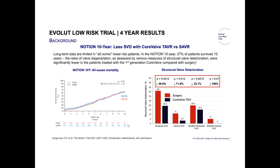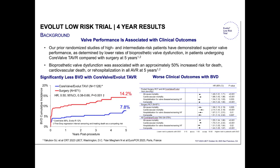Looking at the 10-year results of the Notion trial, the number of patients remaining was fairly low at the end of the study. For severe structural valve deterioration, there's slightly more in the surgical group than in the TAVR group, but that's using the CoreValve. We have fairly good results with the CoreValve and not so much with the SAPIEN. The CoreValve will likely have better durability than the SAPIEN valve, but these results need to be confirmed long-term.